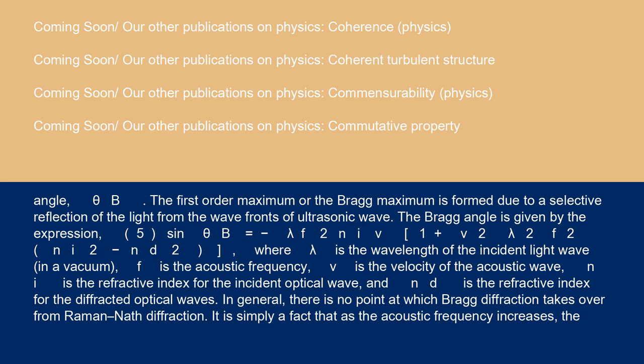The first order maximum, or the Bragg maximum, is formed due to a selective reflection of the light from the wave fronts of ultrasonic wave. The Bragg angle is given by Equation 5: sin(θB) = -λf/(2niv)[1 + (v²λ²f²)/(ni² - nd²)], where λ is the wavelength of the incident light wave in a vacuum, f is the acoustic frequency, v is the velocity of the acoustic wave.